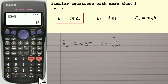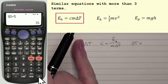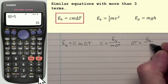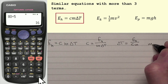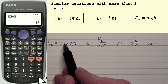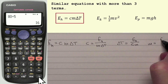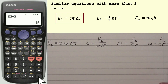If I wanted to work out delta T: it is being multiplied by CM, so divide that side by CM and divide this side by CM as well. That gives delta T equals EH over CM. For M: M is being multiplied by C and delta T, so divide by C delta T. That gives M equals EH over C delta T.